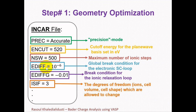EDIFF specifies the global break condition for the electronic self-consistent loop. The relaxation of the electronic degrees of freedom will be stopped if the total energy change between two steps is smaller than EDIFF. This is safe enough and it depends on what accuracy you are looking for.